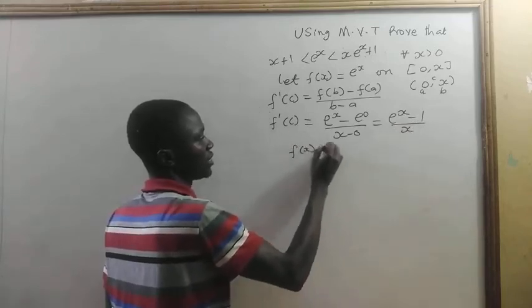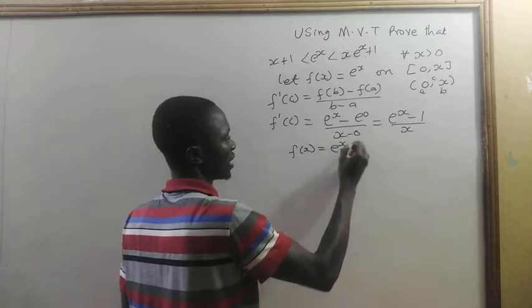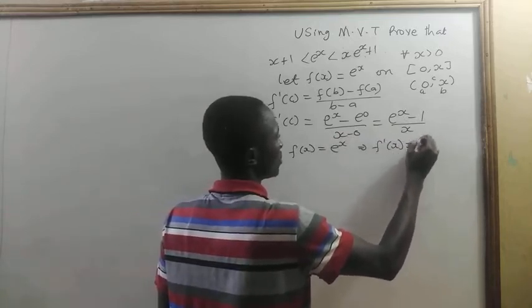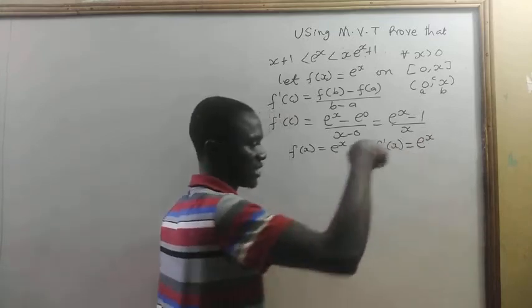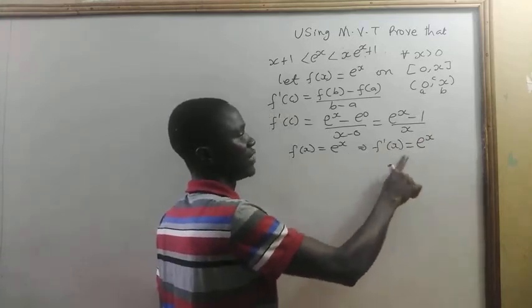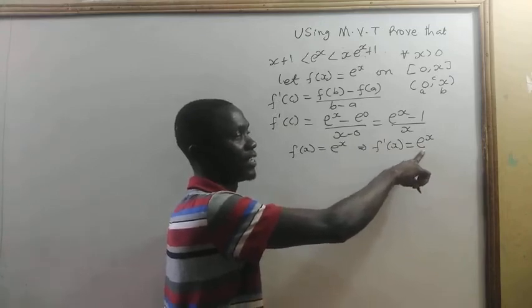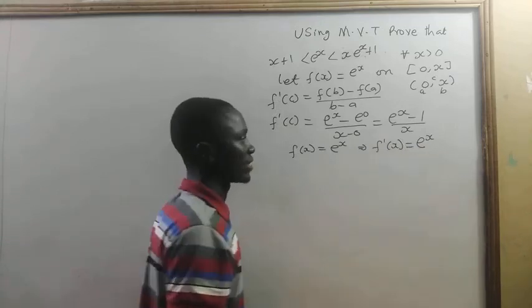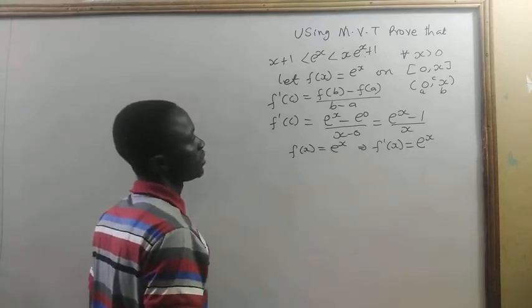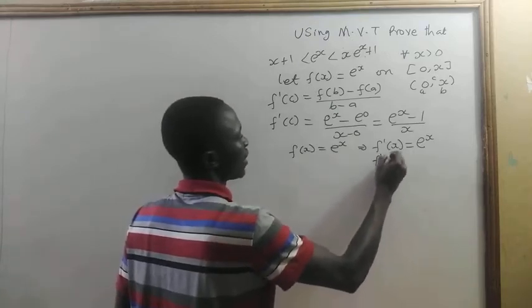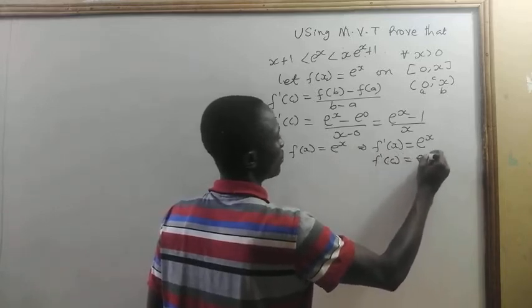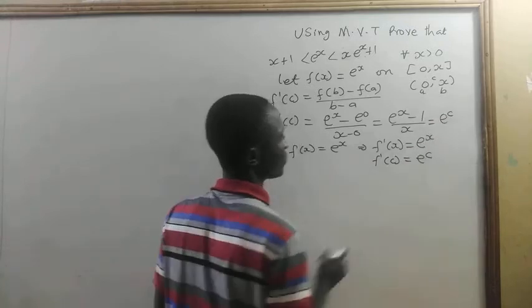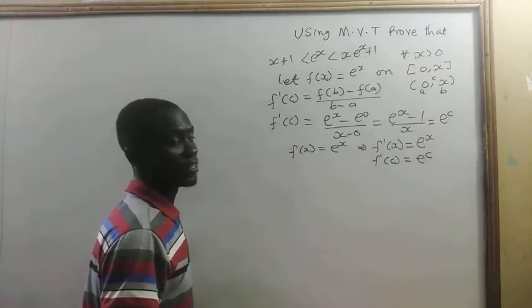Our f of x is equal to e to the power x, which implies that f prime of x is equal to e to the power x — this is the natural exponential function. So our f prime of c will now be e to the power c. So f prime of c equals e to the power c.